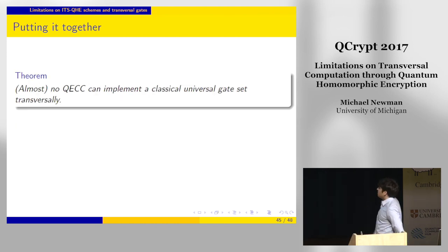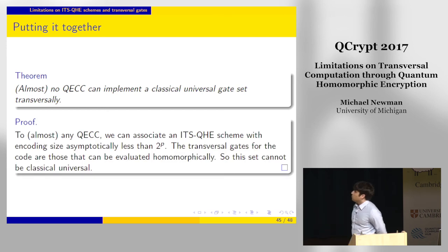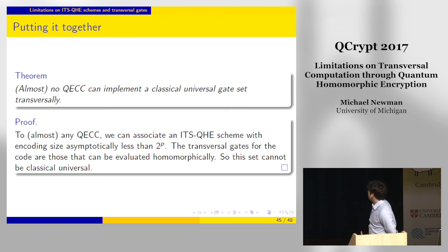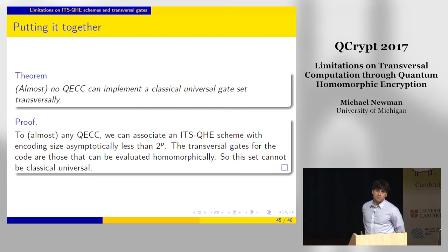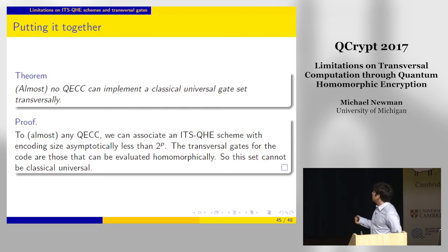Putting this together with the scheme described before: almost no quantum error-correcting code can implement even a classical universal gate set transversally, and the proof is simple. For almost any quantum error-correcting code, that scheme has security with encoding size asymptotically less than 2^p. The transversal gate sets for the code are exactly those that can be evaluated homomorphically, and we just showed that if you can homomorphically implement the full set of classical gates, the encoding size has to asymptotically be 2^p—this can't happen because it would violate the Nayak bound.